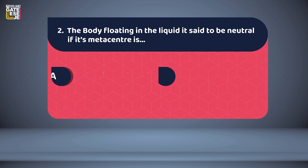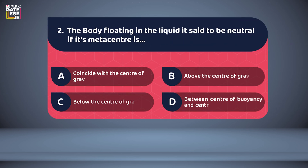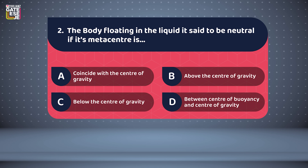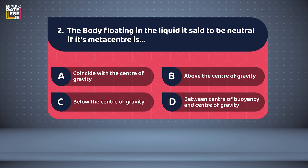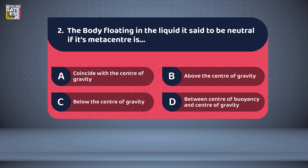Question 2: A body floating in liquid is said to be neutral if its metacenter — Option A: coincides with the center of gravity; Option B: is above the center of gravity; Option C: is below the center of gravity; Option D: is between the center of buoyancy and center of gravity.